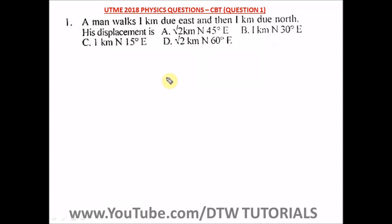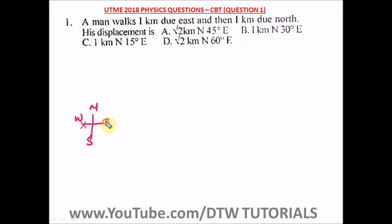Question one of the UTME 2018 Physics past question. It says a man walks one kilometer due east. Let's try to draw this diagram. Let's represent this — that's like a bearing. So let's say the man is here, we have point X here. This is south, this is west, and this is east. So a man walks one kilometer due east — that's one kilometer.